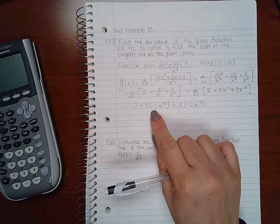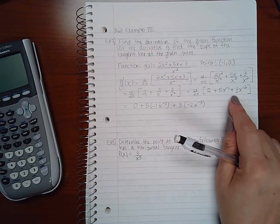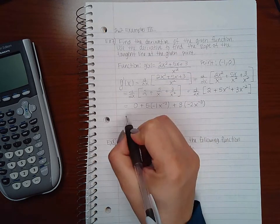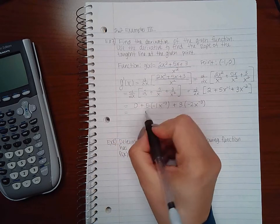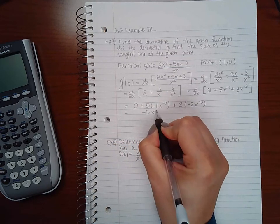So I'm bringing down my powers and decreasing it by 1. Bringing down my power and then decreasing that power by 1. So here I get negative 5x to the negative 2.